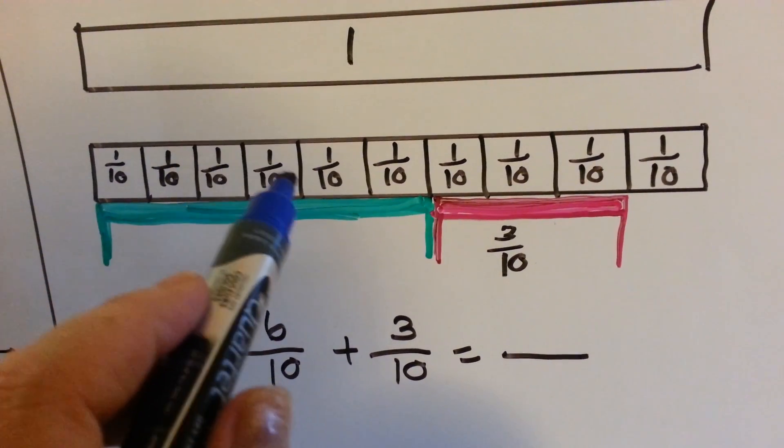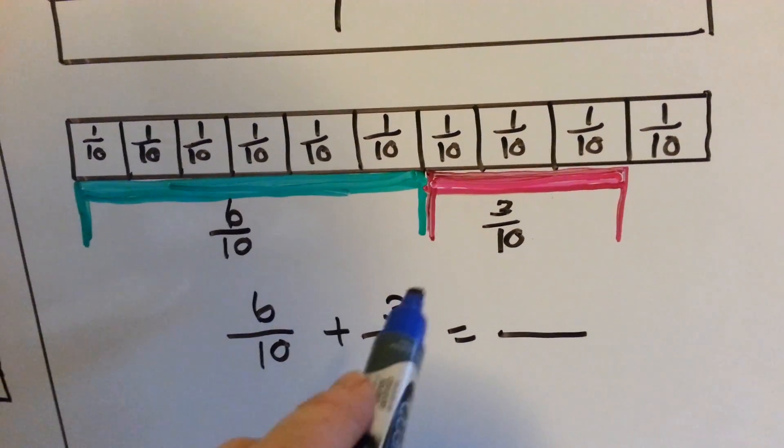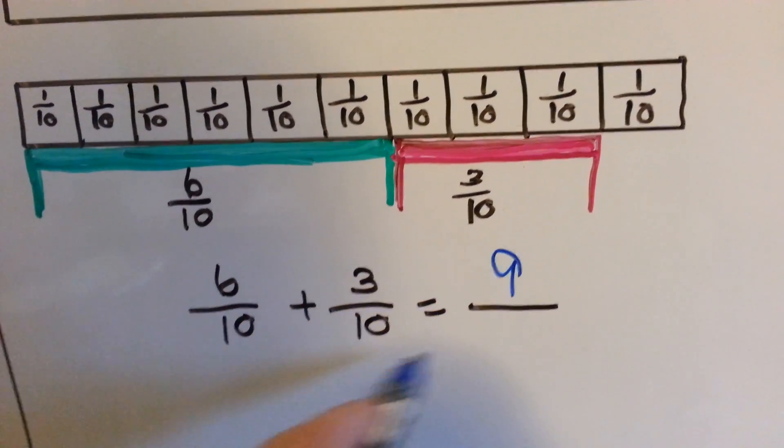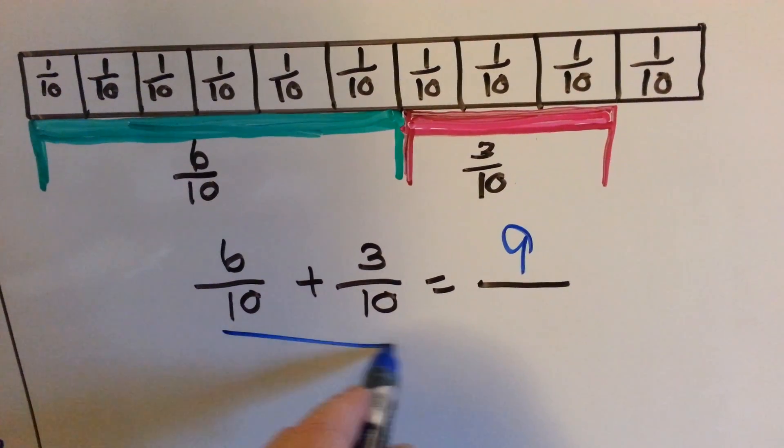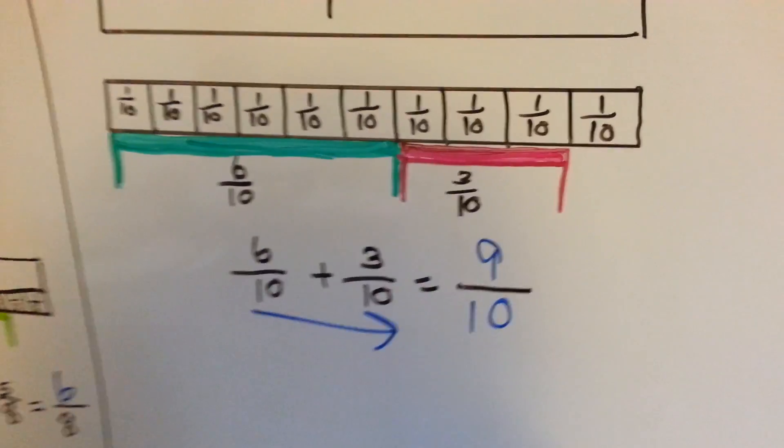Counting 6, 7, 8, 9. 6 plus 3 is 9. And when the denominators are the same, we just slide them over. 9 tenths. Let's try another one.